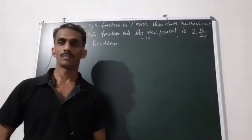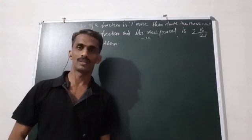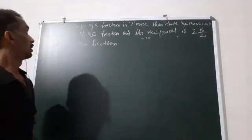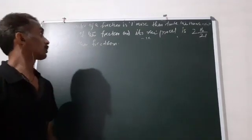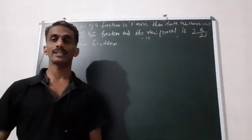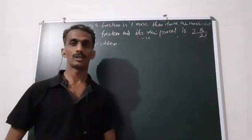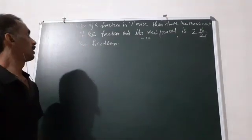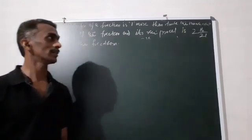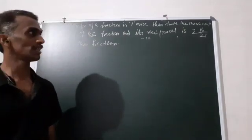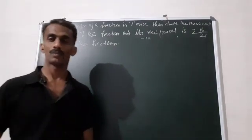Hello everyone. I'm going to ask you a question in second degree equation. The denominator of a fraction is one more than twice the numerator. If the sum of the fraction and its reciprocal is 2 and 16 by 21, find out the fraction.